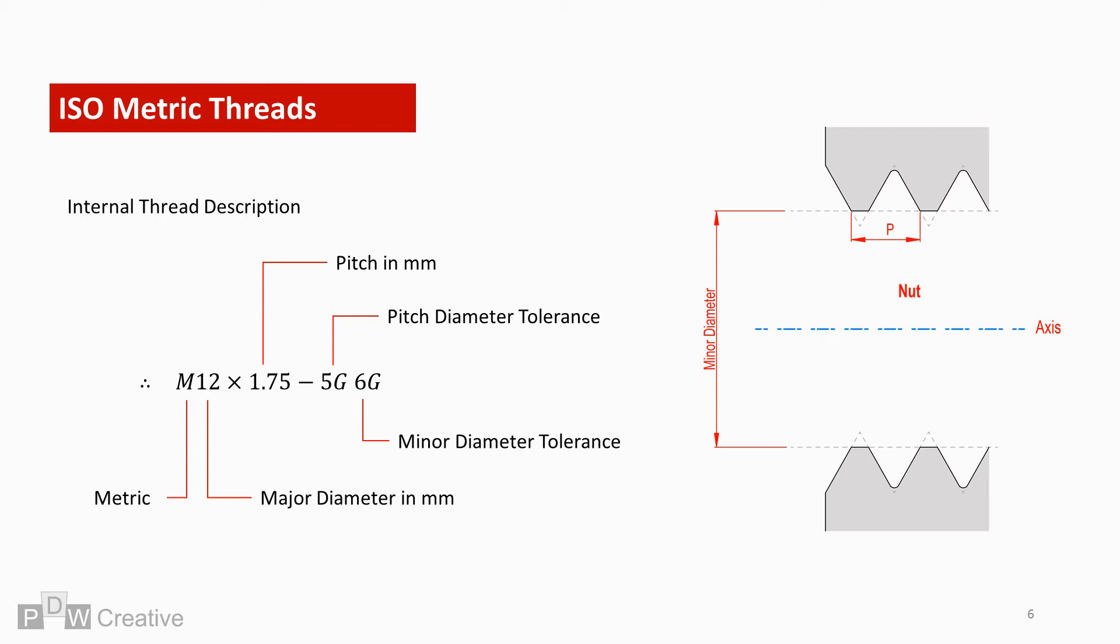The internal thread tolerance is accompanied by capital letters, and this means the deviation is positive. The nut internal thread cannot be smaller than the standard profile, so any tolerance must lead to an increase in size.